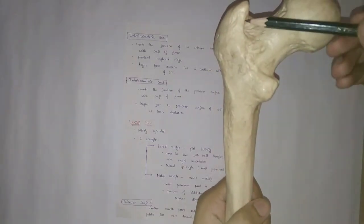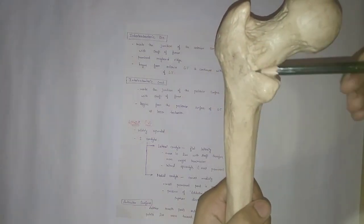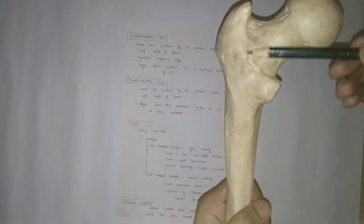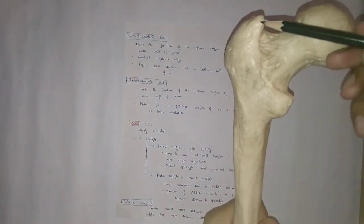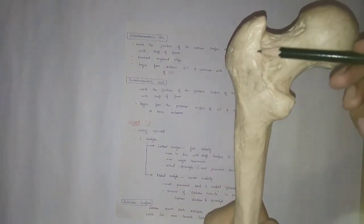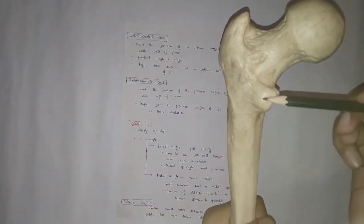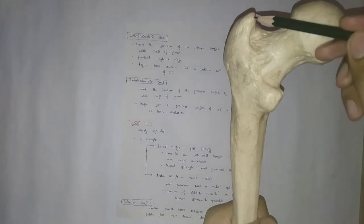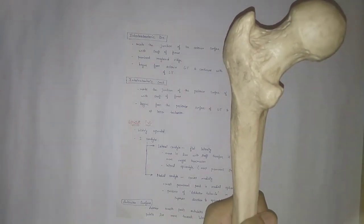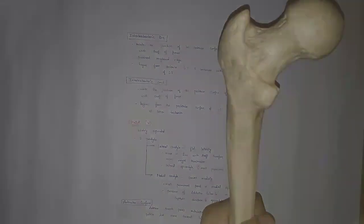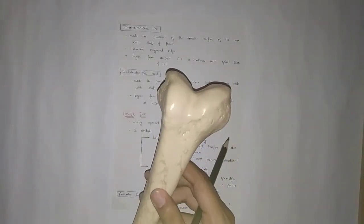The intertrochanteric crest starts from the greater trochanter and ends at the lesser trochanter. With that, we are done with the upper end, and now let's jump to the lower end.